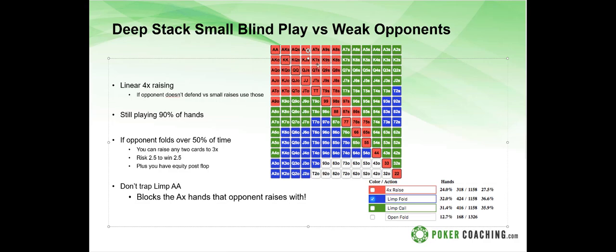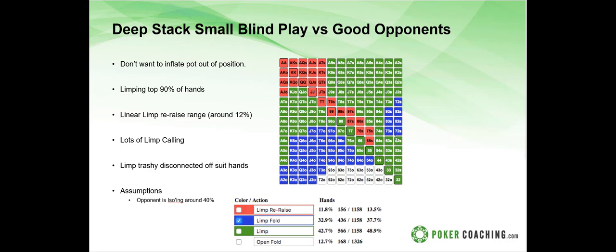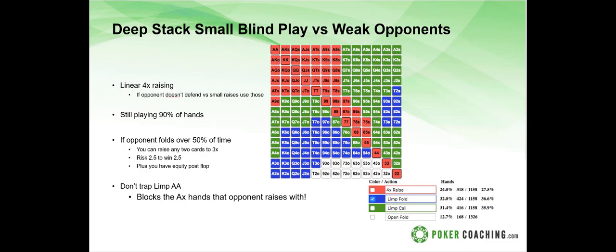So the key points: if opponents fold too much, it can be profitable to raise with any two cards from the small blind. Don't limp trap with aces because you block the range you want them to raise you with. Against a good opponent, limp everything and use a linear limp re-raise. Against a weak opponent, raise the top 25 percent with a wide linear range. The strategy depends on how often the big blind will raise against your limp.